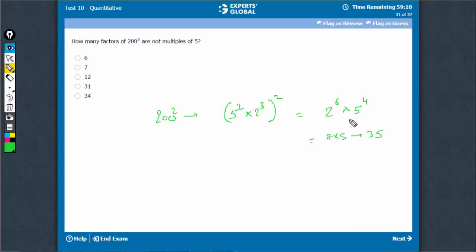Out of these, how many are not multiples of 5? To find out how many are not multiples of 5, you have to completely ignore this part. So, how many are not multiples of 5? Only 6 plus 1, 7 are not multiples of 5. Only these 7 are not multiples of 5.